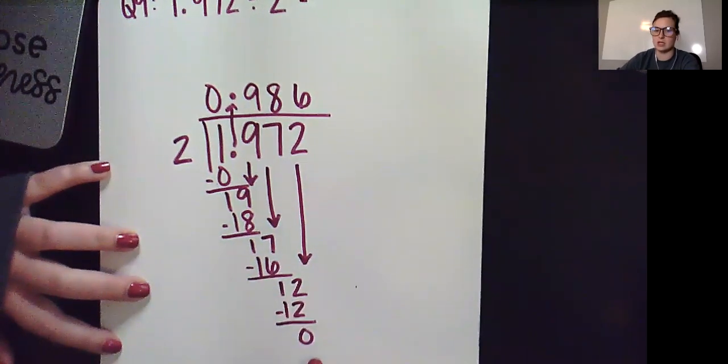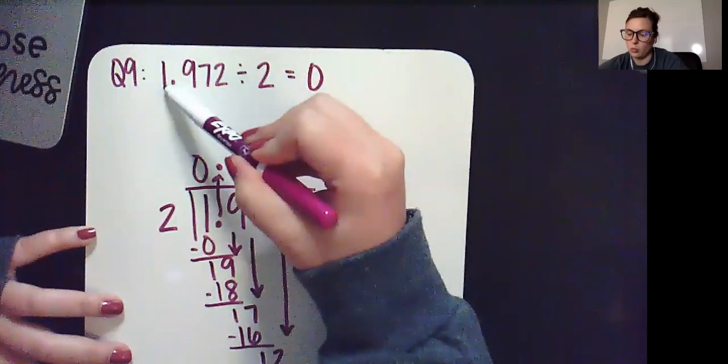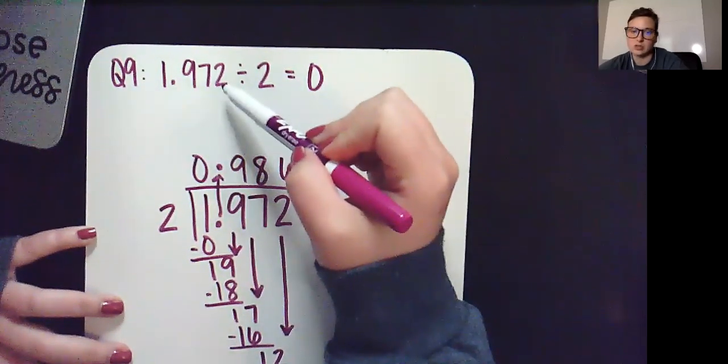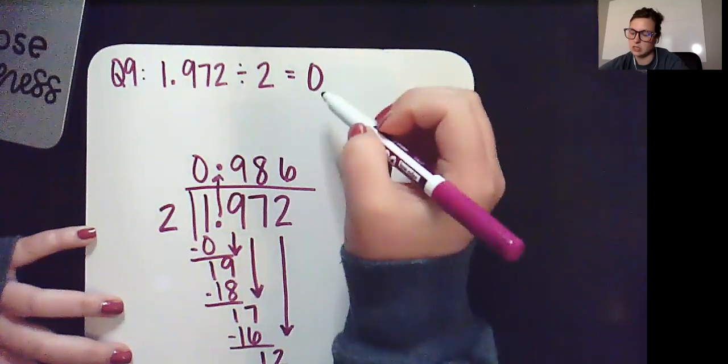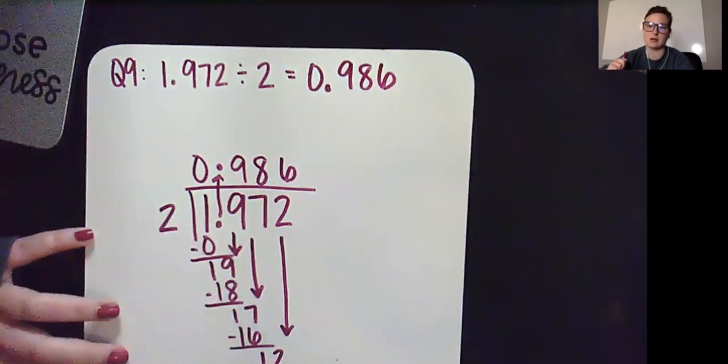Nothing left to bring down ending with a 0. So our final answer of 1 and 972 thousandths divided by 2 equals 0 and 986 thousandths.